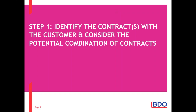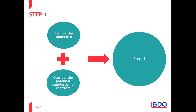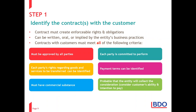Let's focus on step 1 today: identifying the contracts with the customer and considering the potential combination of those contracts. Step 1 has two key parts — identifying the contract or contracts, and then considering whether we should combine them. It's really important that we understand that the combination of contracts and considering the potential combination is an integral part of step 1 and should not be overlooked.